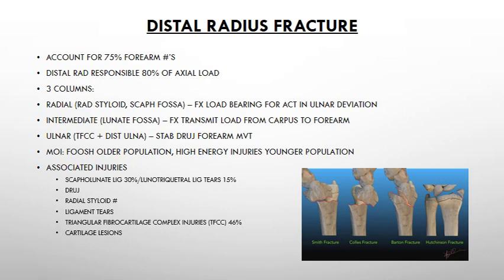Distal radius fractures account for 75% of all forearm fractures. The most frequent mechanism of injury is a fall on the outstretched hand, especially in the older population. When you see a younger person presenting with a distal radius fracture, that is normally due to a high energy injury.